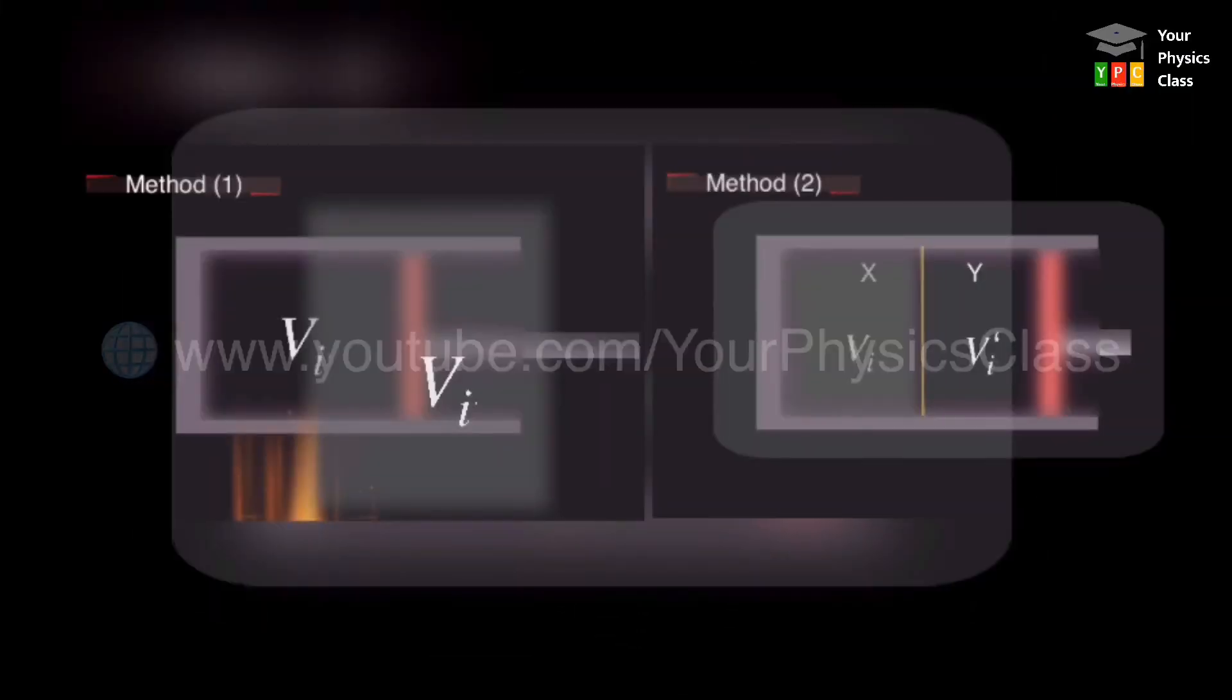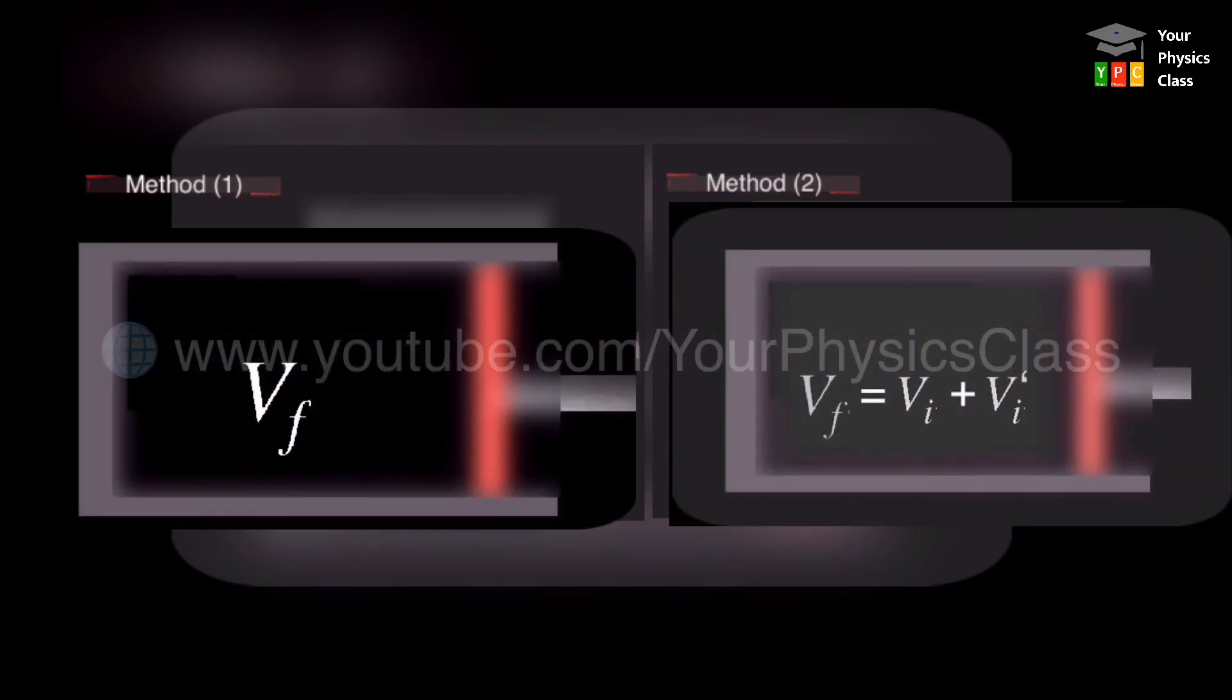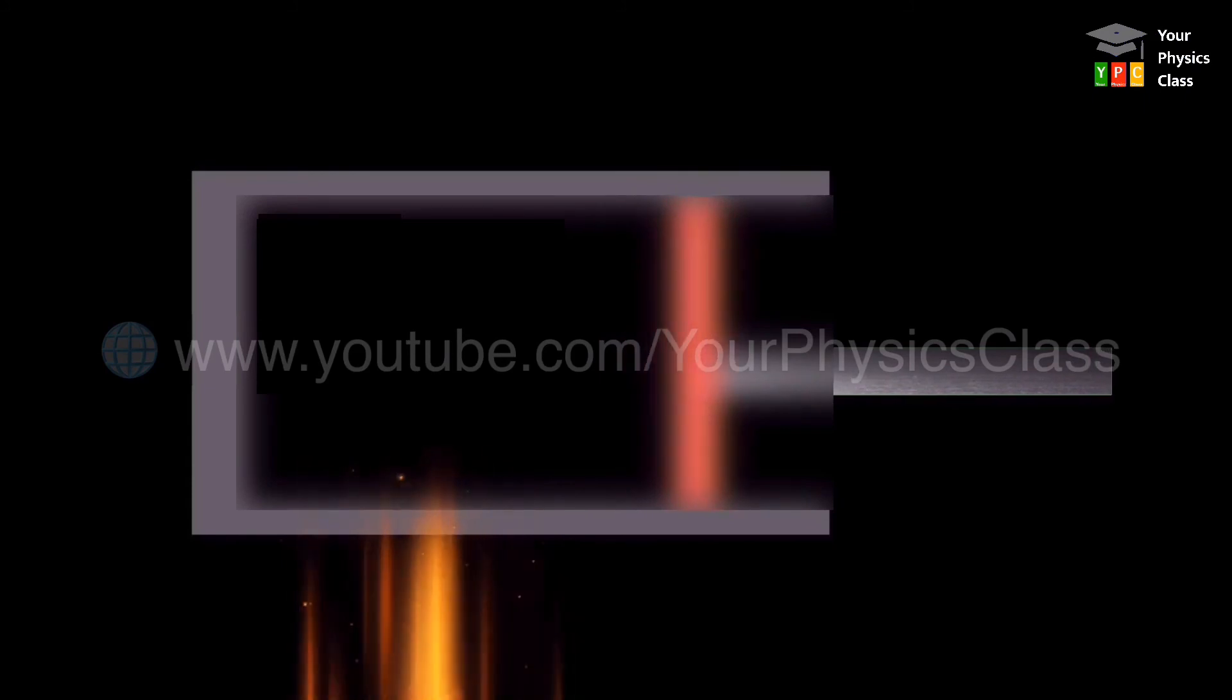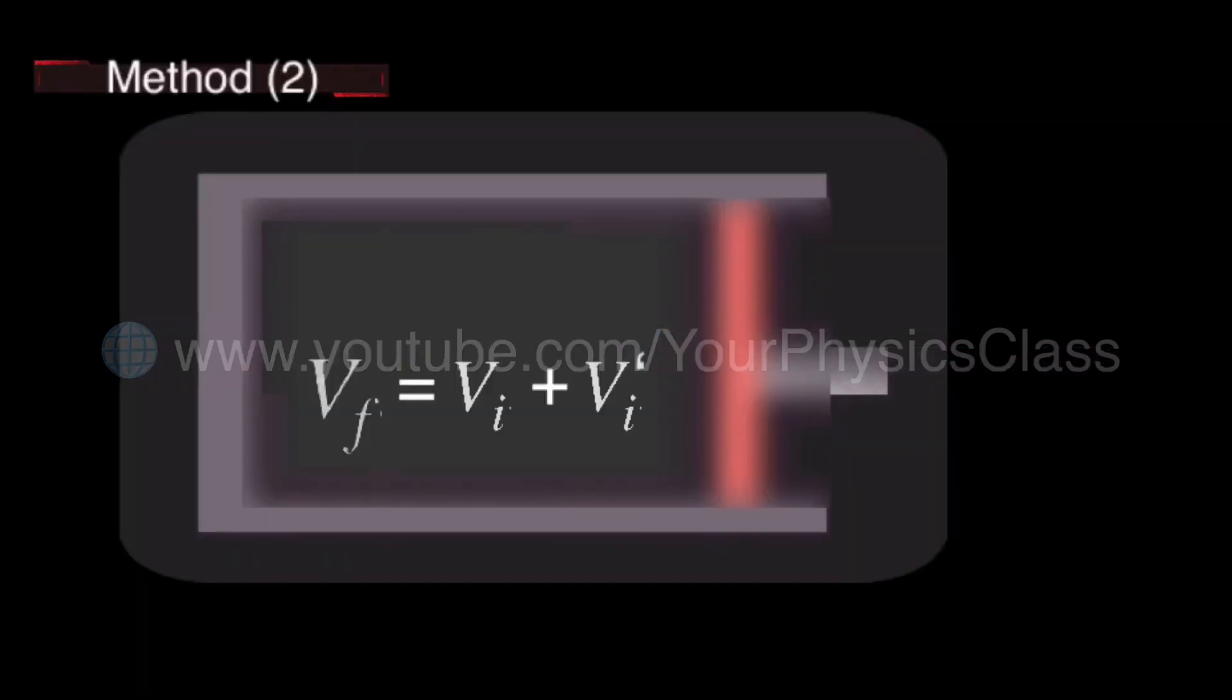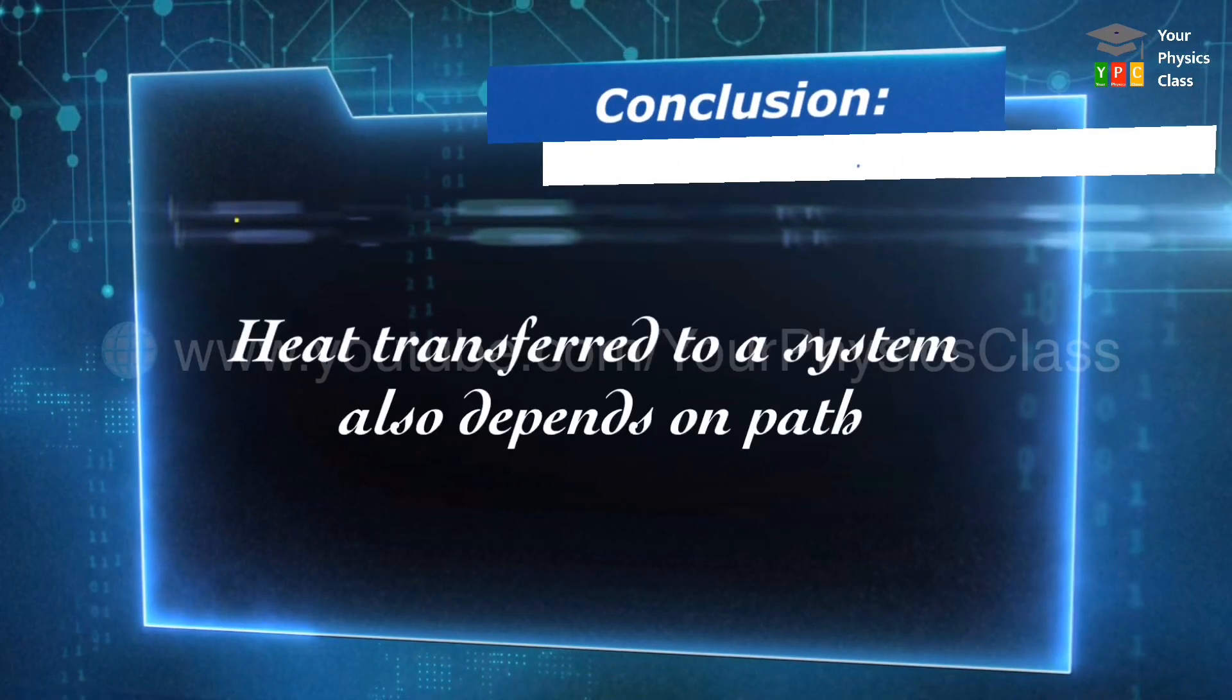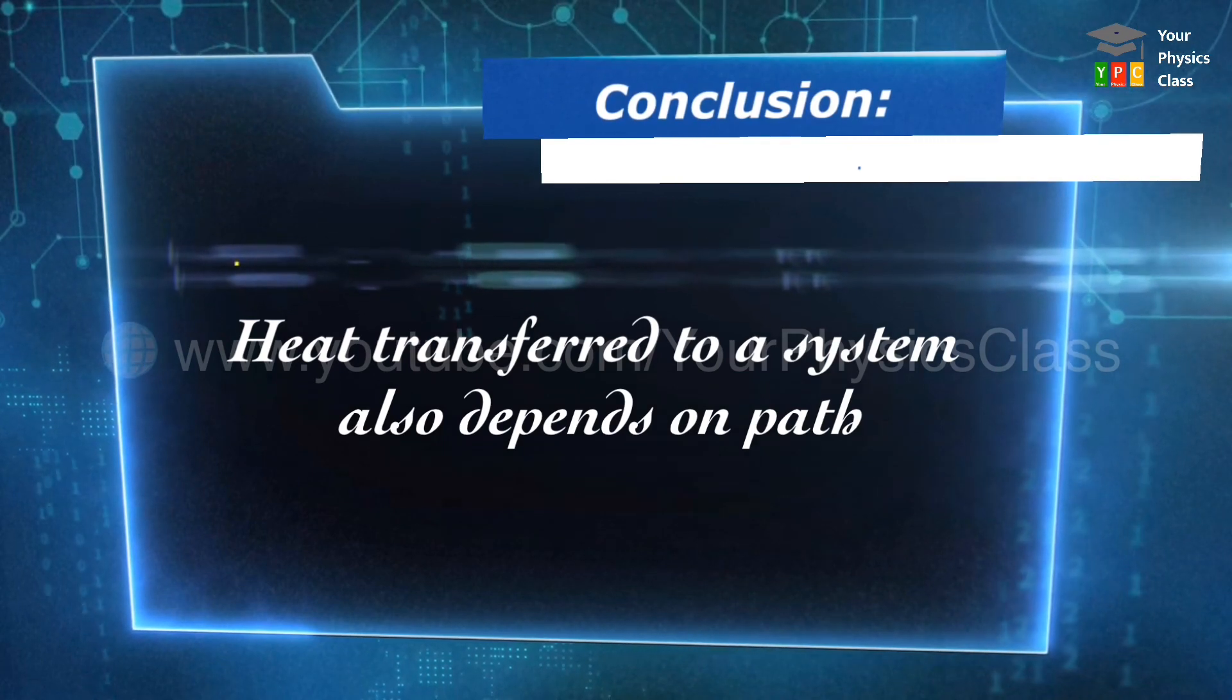It is experimentally observed that in both cases, the initial and final state of the system are the same. But the intermediate states or path during the change of state in the first and second case are different. To conclude, heat transfer to a system also depends on the path.